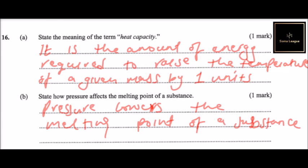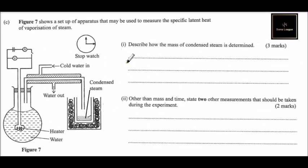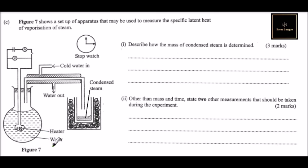Part c: Figure seven shows a setup of apparatus that may be used to measure the specific latent heat of vaporization of steam. We have a setup here — we have the heater, we have the water here.